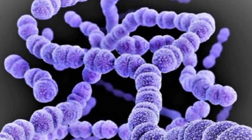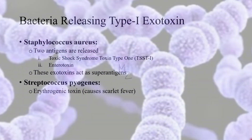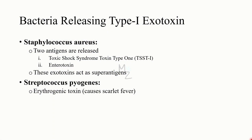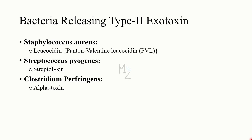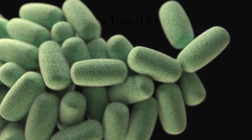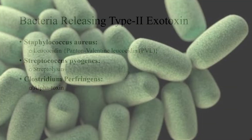For type 2 exotoxins, the first two bacteria are similar to type 1 but the third is different. Staphylococcus aureus releases Panton-Valentine leukocidin (PVL). Streptococcus pyogenes releases streptolysin. The third bacterium, Clostridium perfringens, releases alpha toxin.